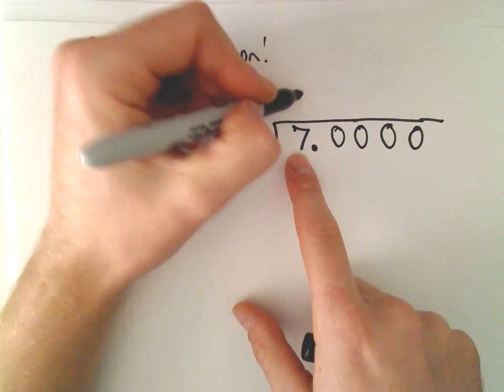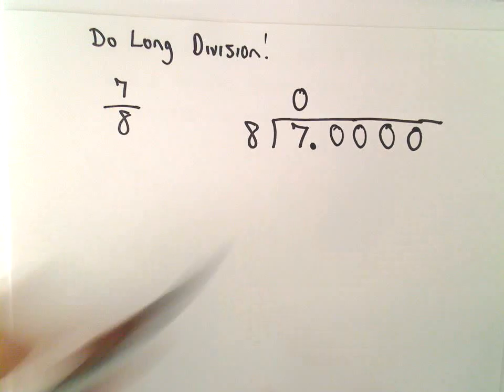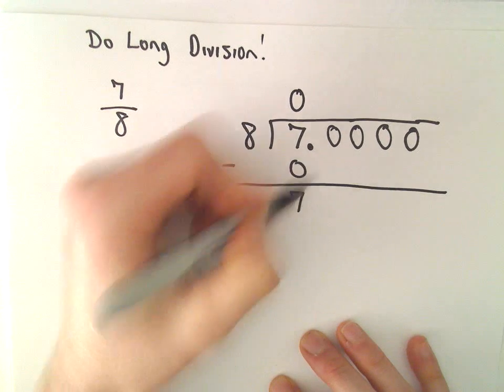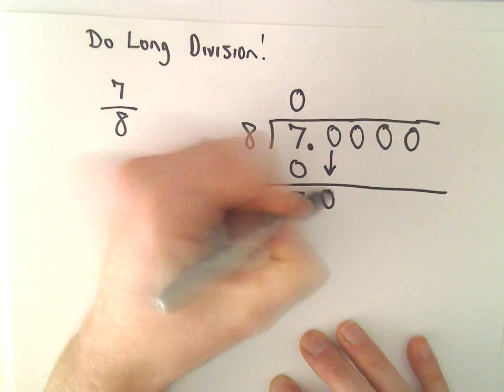So eight will go into seven zero times. Zero times eight is zero. We can just subtract: seven minus zero is seven, and we'll drop down our zero.